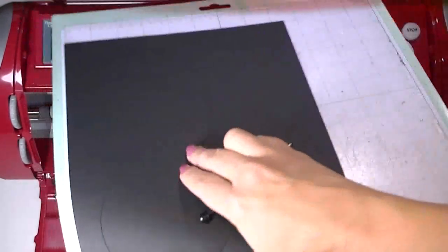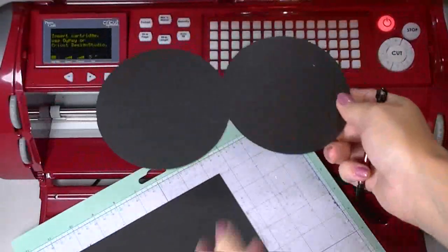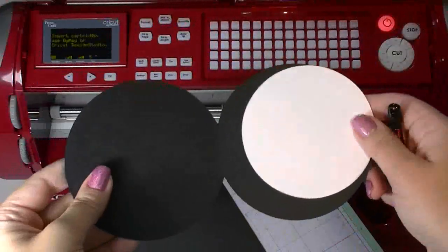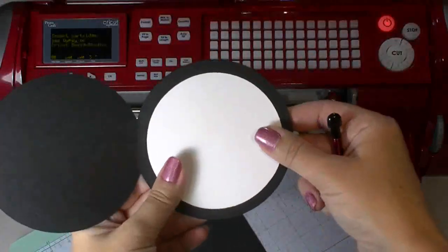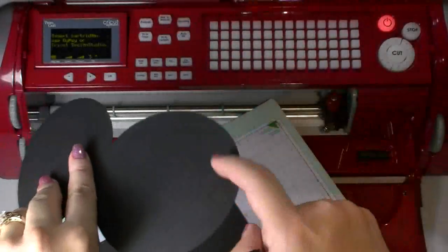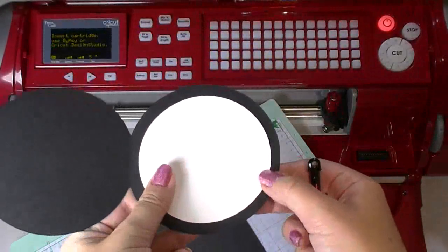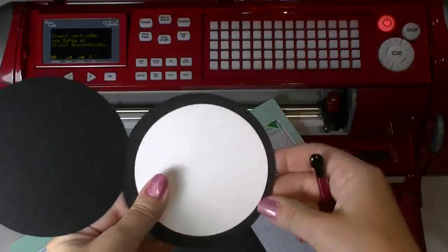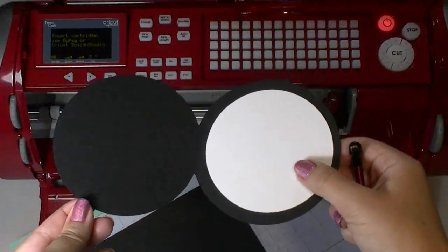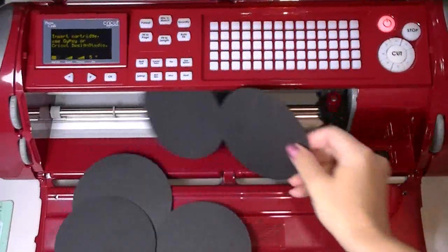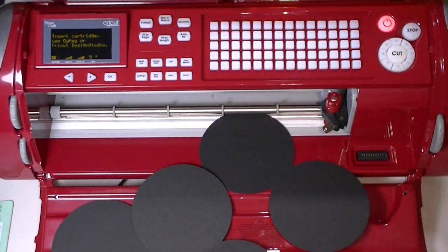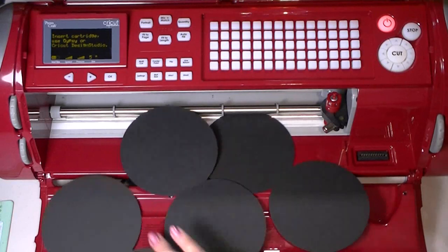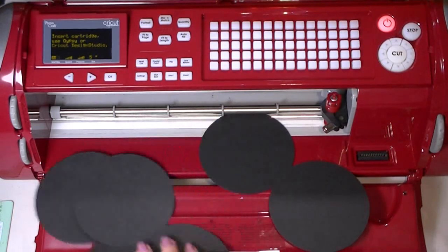I definitely need to score that so it'll fold nicely. But look, here's the part they're going to write on. And now we just need to make the basketball for the front. I'm using the basketball cartridge in my Gypsy, so there is a whole cartridge just for basketball, which I think is great. All right, check this out. We've got three not yet scored basketball cards and the circles are downstairs being signed by my sons right now. It's taking them longer to sign it than it's taking me to make this card.